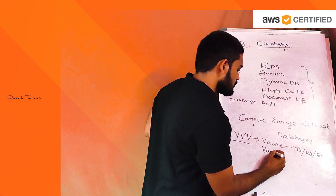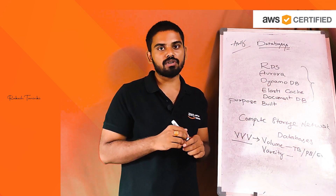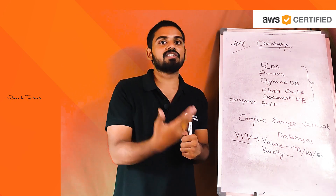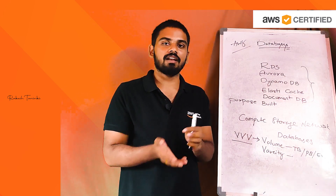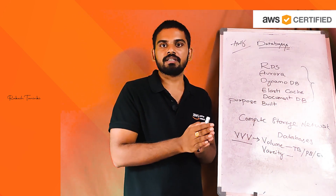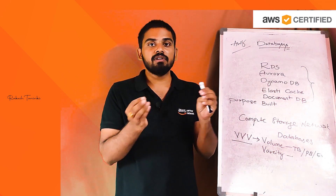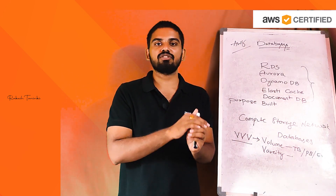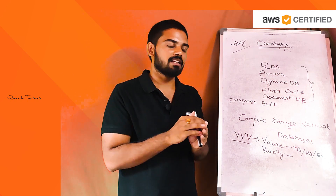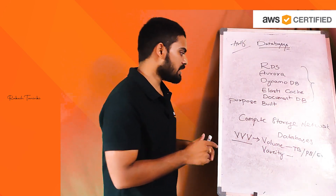The second V is Variety of data. This covers relational databases and non-relational databases, as well as structured data, unstructured data, and semi-structured data. Depending on what structure our data is in, we derive which database to use.